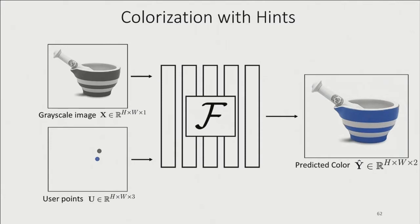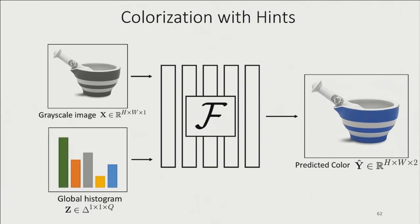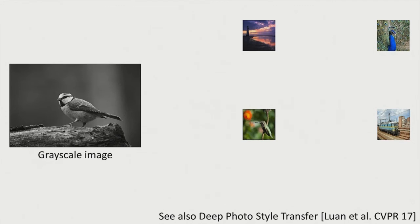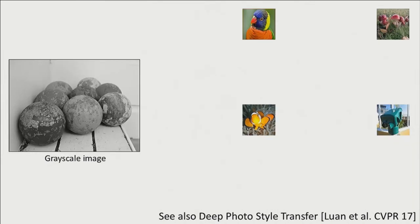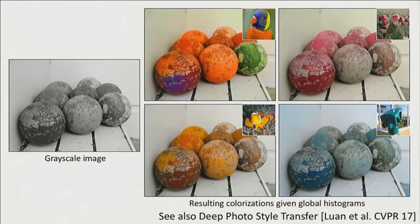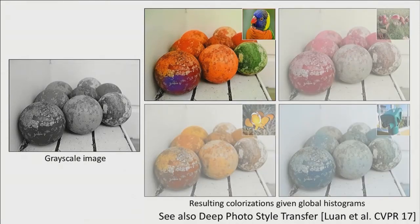Instead of local color hints, we can also provide other kinds of user hints, like a color histogram. This is implemented the same way — we simply feed the desired color histogram to the network as input. Here the bird is characterized using the color histogram from a smaller reference image in the corner, and here are the results. This is another way for a user to quickly explore diverse possible colorizations. Here are colorful results given different kinds of reference images. Notice that the algorithm assigns different colors from the reference to different objects in the scene.